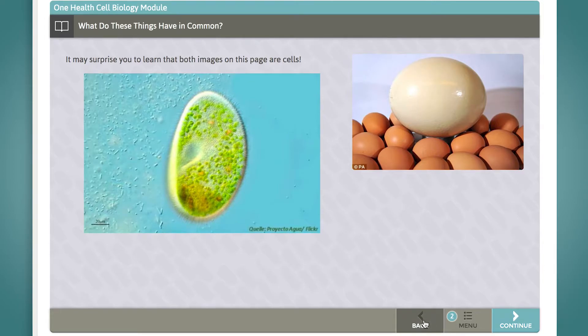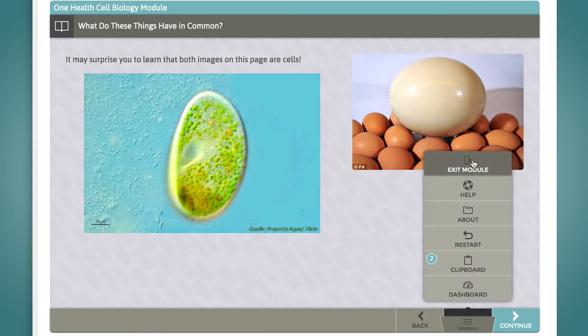Also within the learning path is a menu button with additional tools for your use. Here you can exit the entire learning module, seek help if you need it, learn more about the authors of the content, restart that specific learning path from the beginning, as well as view the path clipboard.